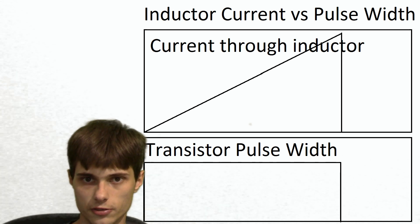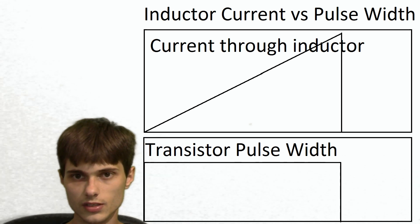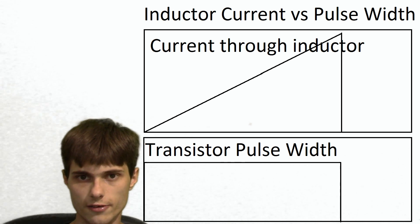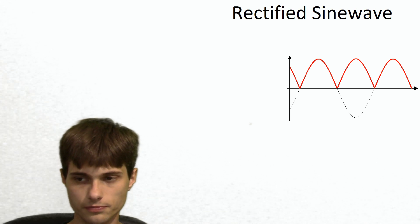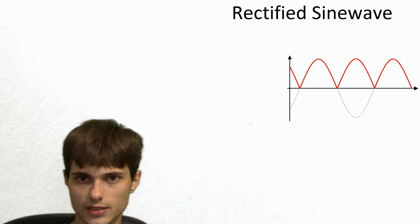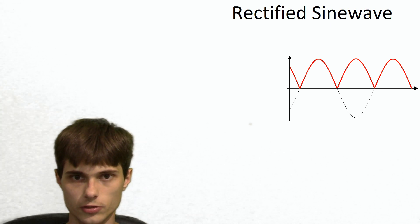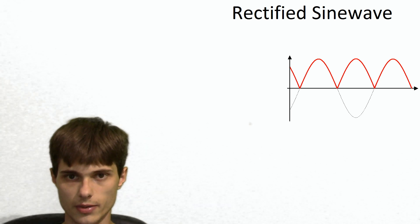So what does this have to do with the power factor corrector? Well, when we look at the waveform of an AC sine wave going through a rectifier, it gets turned into this. It's not smooth DC. It's lumpy. It's still going to zero volts, but it's coming back up to a peak and then falling back down to zero.